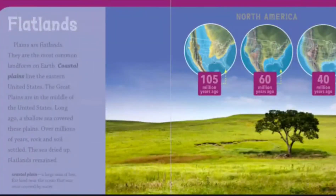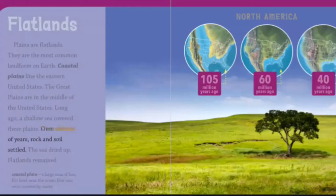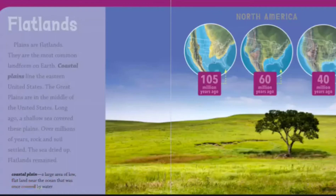Flatlands. Plains are flatlands. They are the most common landform on Earth. Coastal plains line the eastern United States. The Great Plains are in the middle of the United States. Long ago, a shallow sea covered these plains. Over millions of years, rock and soil settled. The sea dried up and flatlands remained. A coastal plain is a large area of low, flat land near the ocean that was once covered by water.